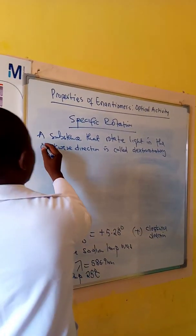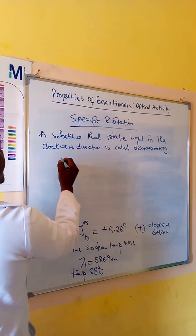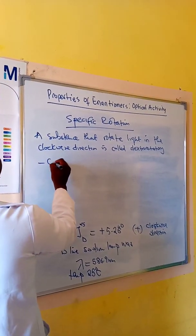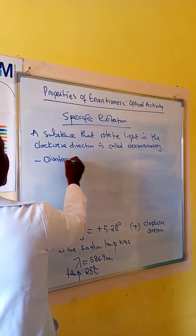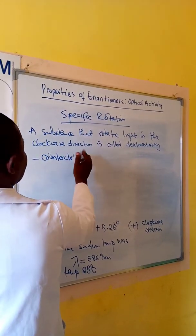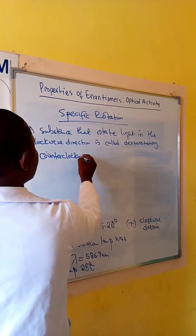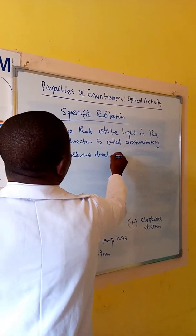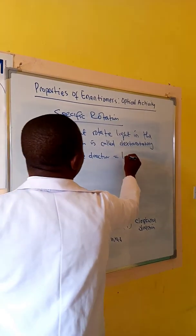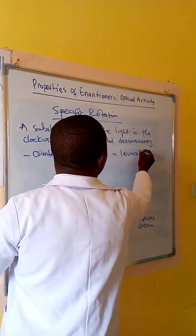While a substance that rotates light in the counterclockwise direction is called levo rotatory.